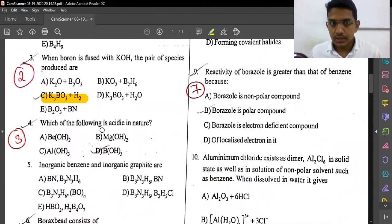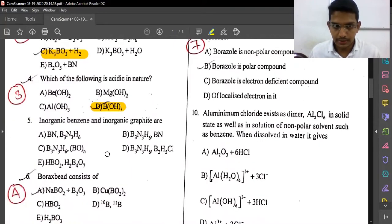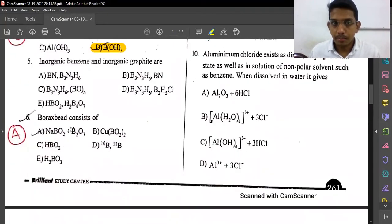Which of the following is acidic in nature? BeO₂, MgO₂, Al(OH)₃, or Be(OH)₂. Metals and their hydroxides - the hydroxides of the group elements. Be(OH)₂ is the answer because it reacts in the middle to form H⁺ ions, so it is acidic.